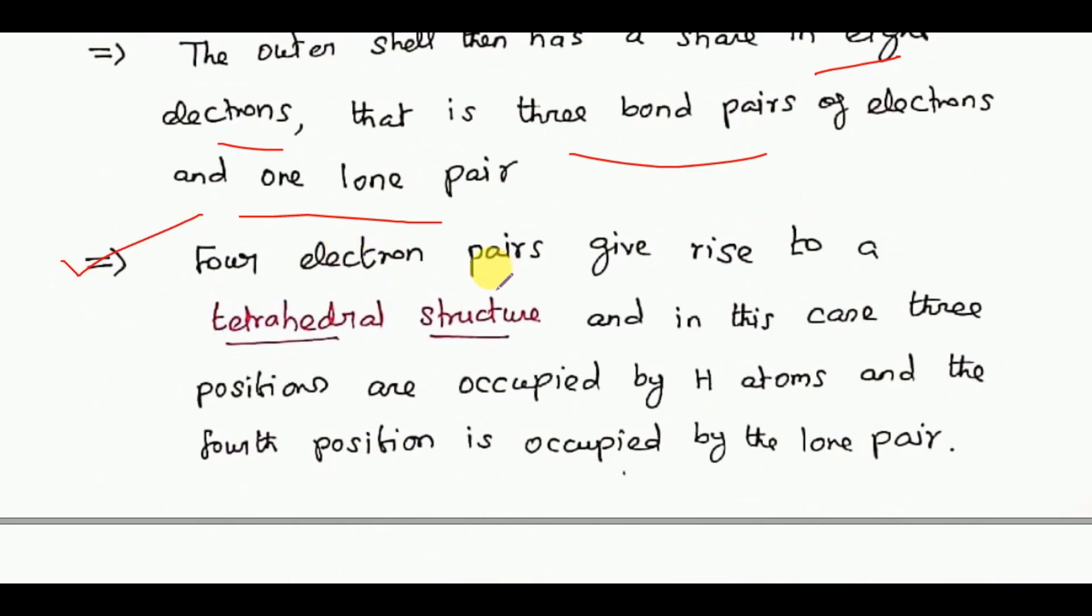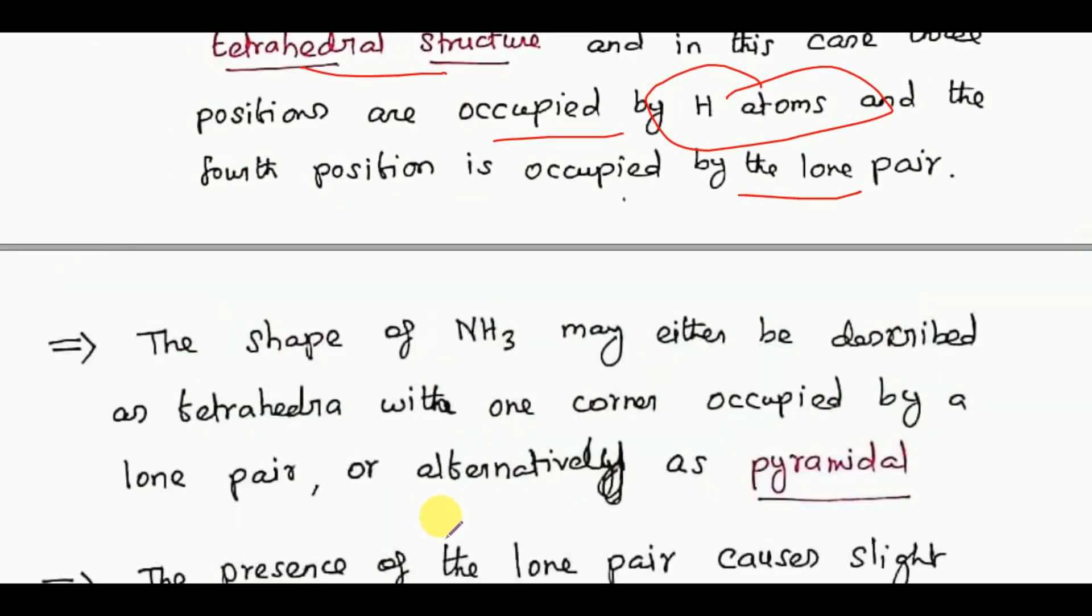Four electron pairs give rise to a tetrahedral structure, and in this case three positions are occupied by hydrogen atoms and the fourth position is occupied by the lone pair.